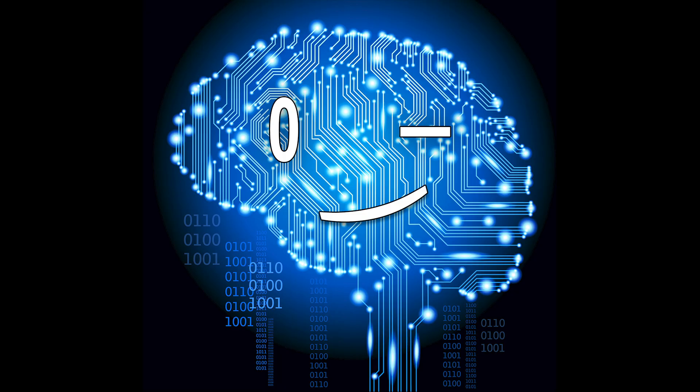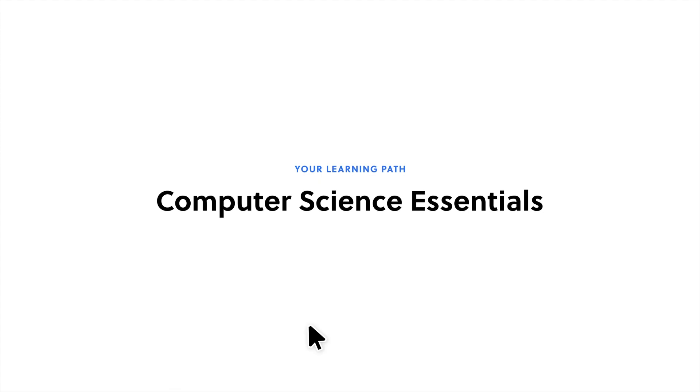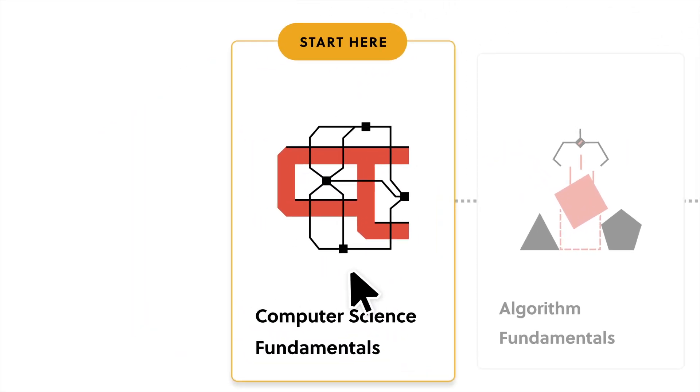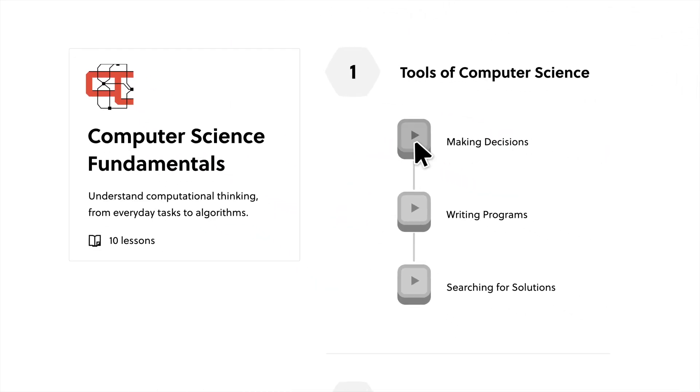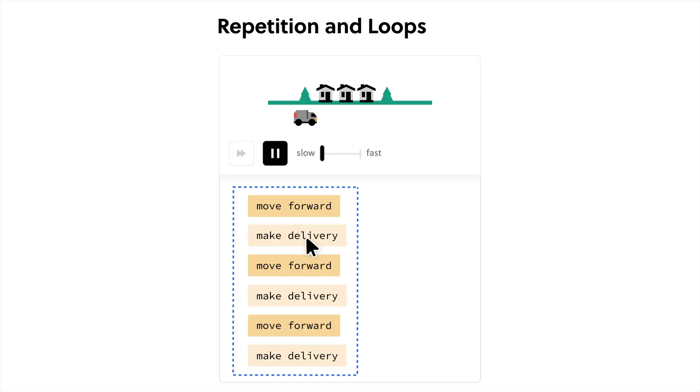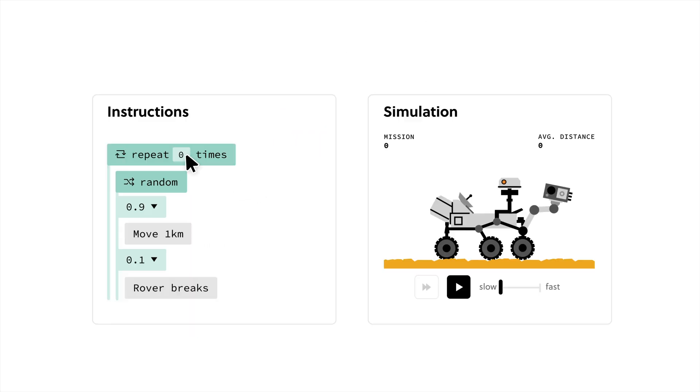Embracing lifelong learning is essential for professional success, and Brilliant's Computer Science Fundamentals course serves as the ideal starting point. By dedicating just 15 minutes a day, you'll wrap your mind around computational thinking, from everyday tasks to algorithms.